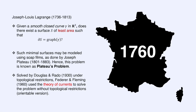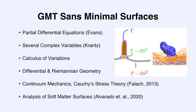It was Federer and Fleming who did the solution of Plateau's problem for orientable surfaces — the orientable case. Herbert Federer was born on July 23rd, 1920, in Vienna. After emigrating to the U.S. in 1938, he studied mathematics and physics at the University of California, Berkeley. Affiliated to Brown University, Providence, since 1945, he is now Professor Emeritus there.